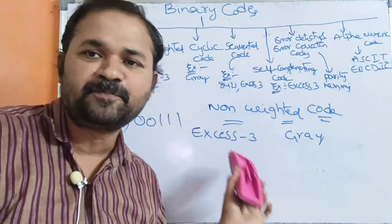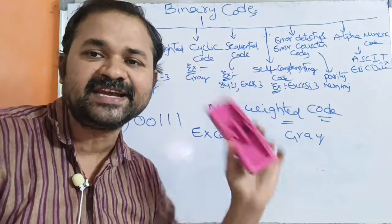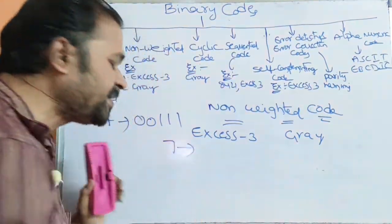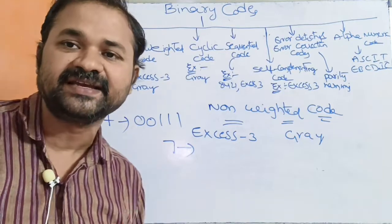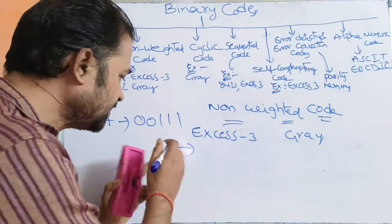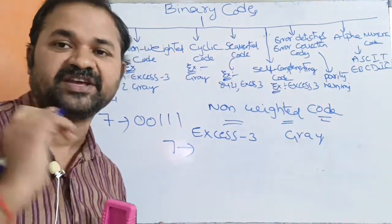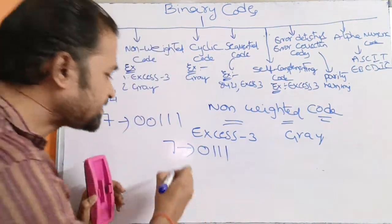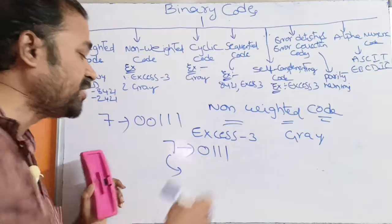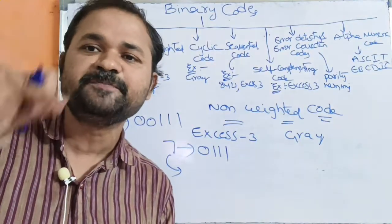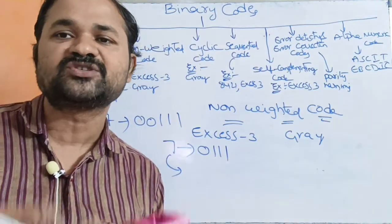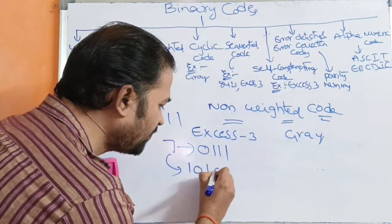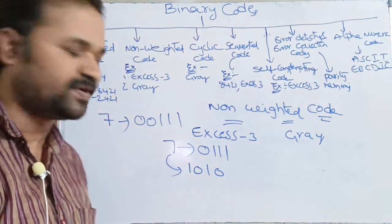XS3 means simply we have to add 3 to the decimal digit. Let the number be 7. How we can represent 7 in BCD notation? For representing each digit, we require 4 bits. So 7 means 0 1 1 1. In XS3 notation, 7 means simply we have to add 3. So 7 plus 3 means 10. So 10 is represented in binary notation as 1 0 1 0.